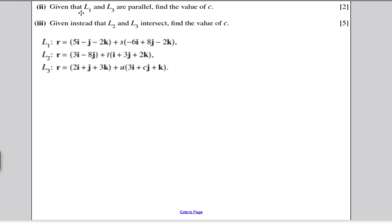Part two. It says that L1 and L3 are parallel. Find the value of C. Now, if two lines are parallel, that means their direction vectors are multiples of each other. So, if we know that, well, we know that this vector must be a multiple of that vector there. Well, is it?